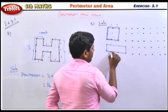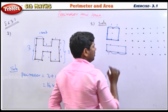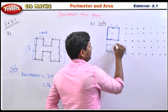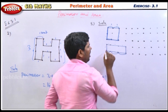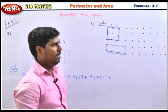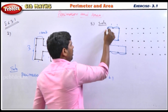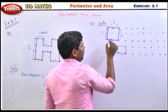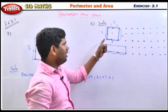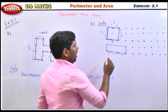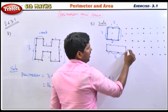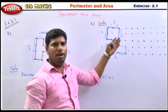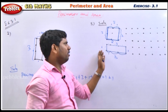The length between dots is 1 unit. First shape: each side is 2, so 2 plus 2 plus 2 plus 2 equals 8. This is a square because all sides are equal. Second shape: this side is 3, this side is 1, opposite side is 3, opposite side is 1 — it's a rectangle because opposite sides are equal. The perimeter is 3 plus 1 plus 3 plus 1 equals 8.